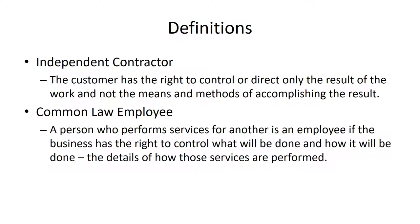An independent contractor is a worker where the customer has the right to control only the result of the work, and not the means and methods of accomplishing the result. A common law employee, on the other hand, is a person who performs services where the business has the right to control what will be done and how it will be done. Essentially, the difference has to do with how much control the employer has over the worker's work — the less control, the more likely the worker is an independent contractor; the more control, the more likely the worker is a common law employee.